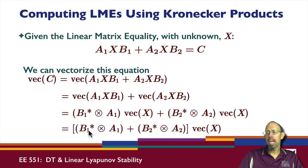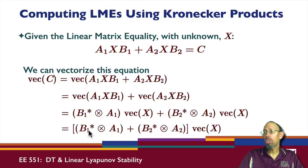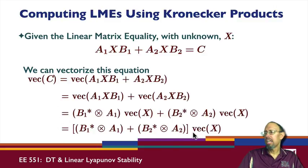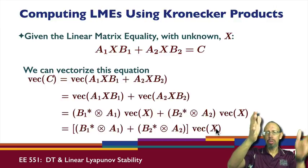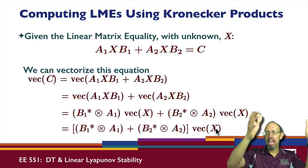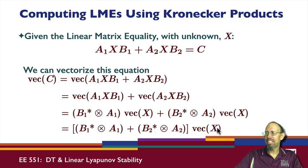The unknown VEC(X) may or may not yield a unique solution — depending on whether the coefficient matrix is square, we may have a unique solution, infinitely many solutions, or no solution. Once we solve this linear equation for VEC(X), we can then un-VEC X by taking the long column vector and restoring the columns back to their original positions, as long as we remember the column length.